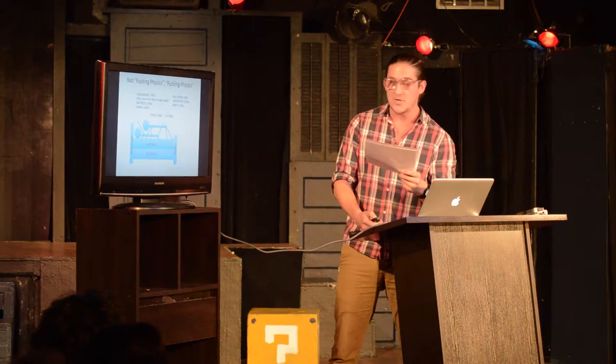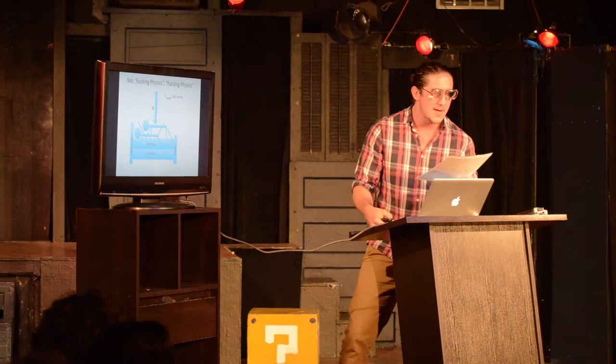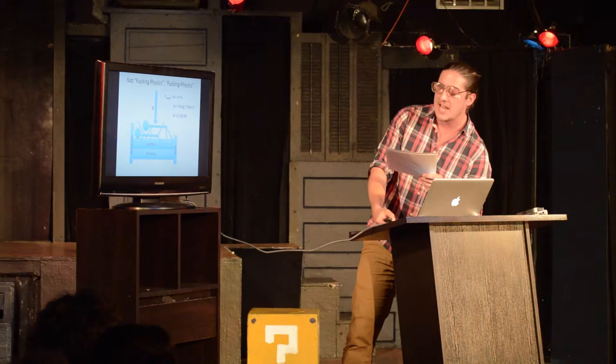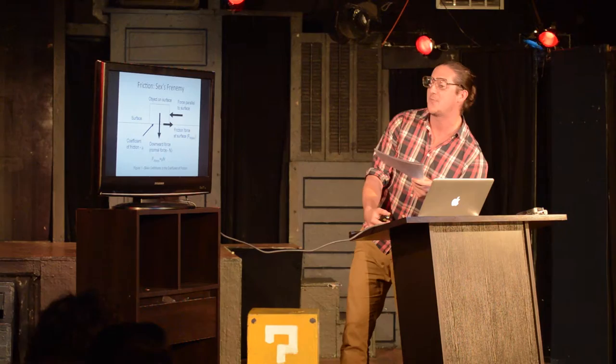But that's not the weight. You've got to multiply it by 9.8 meters per second squared — the acceleration of gravity. Which gives us 3,334 newtons of downward force. Why do we need to know that? Because friction comes into play.